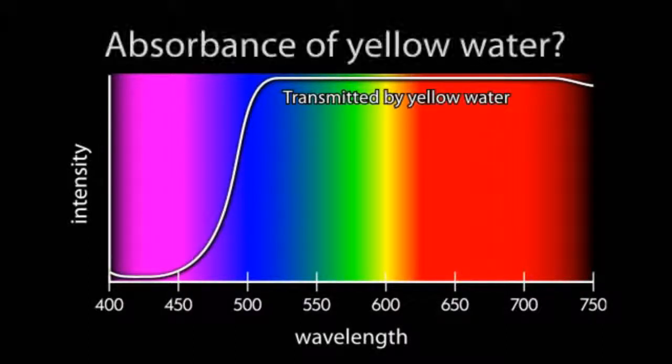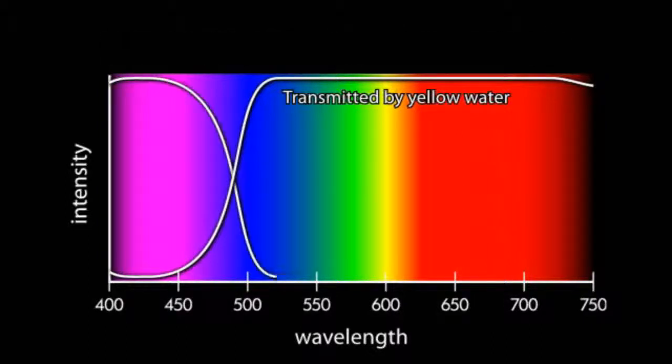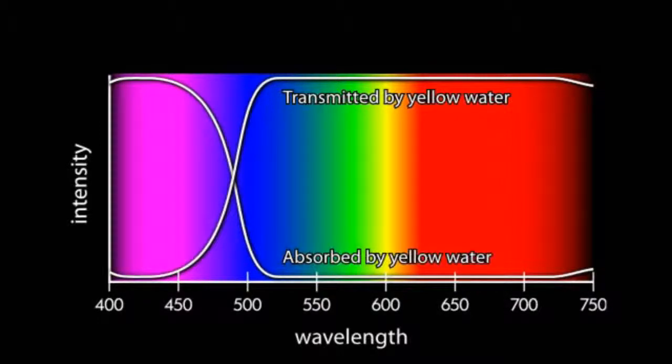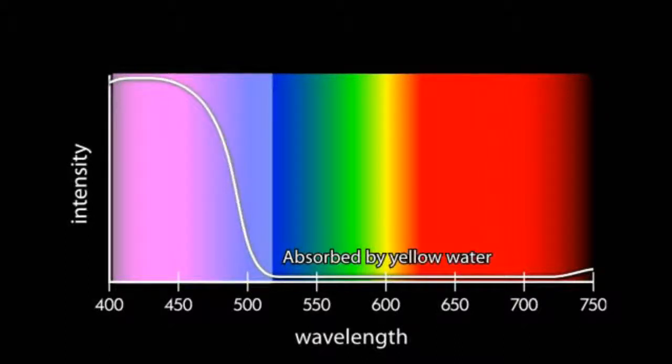What wavelengths are absorbed by the yellow water? Transmittance and absorbance have an inverse or opposite relationship. So the wavelengths that are absorbed are those that are not transmitted. In this case, blue and violet are absorbed.